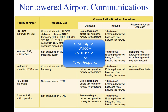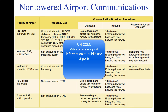The CTAF may be a Unicom, Multicom, Flight Service Station, or Tower Frequency, and is identified in appropriate aeronautical publications. Unicom is a non-government air-ground radio communication station which may provide airport information at public-use airports where there is no tower or FSS. On pilot request, Unicom stations may provide pilots with weather information, wind direction, the recommended runway, or other necessary information. If the Unicom frequency is designated as the CTAF, it will be identified in appropriate aeronautical publications.